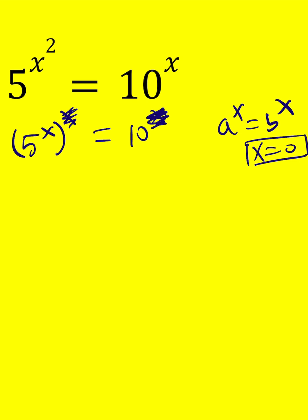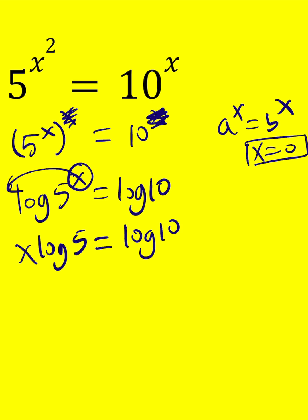So let's go ahead and log both sides with base 10, because that's our number on the right hand side. Bring the x over: x log 5. Remember, properties of logarithm, you should know them. And then finally, divide both sides by log 5.